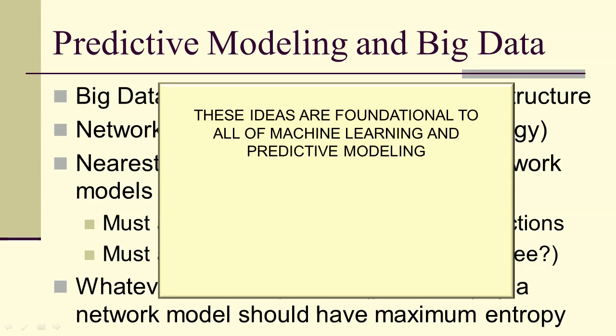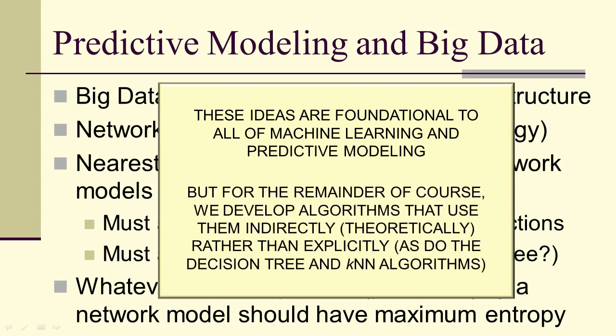And then we also need that everything that's not explained by the model should have maximum entropy. These ideas are foundational to all of machine learning predictive modeling, and we've carefully built them up to this point. However, for the remainder of the course, we're going to use these ideas indirectly or theoretically, rather than explicitly, as we did for decision trees and nearest neighbor algorithms.